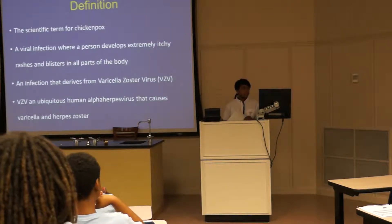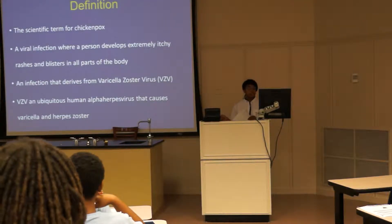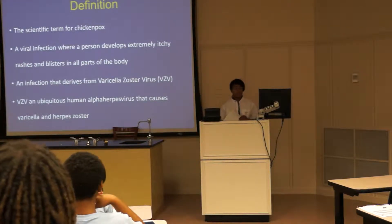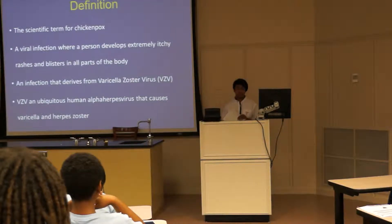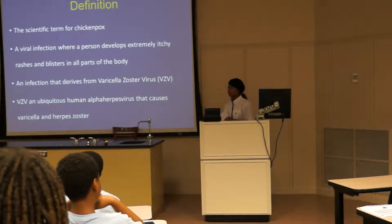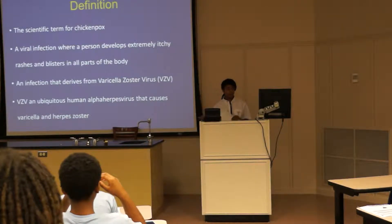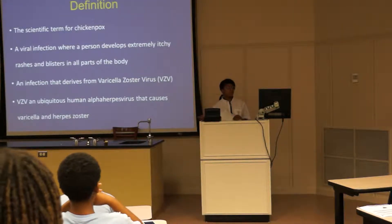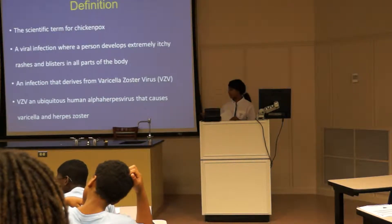Background. Varicella is a scientific term for chickenpox. It is a viral infection where a person develops itchy rashes and blisters in all parts of the body. It is an infection that derives from Varicella-Zoster Virus, or VZV. Varicella-Zoster Virus is an ubiquitous human alpha herpes virus that causes Varicella and herpes zoster.